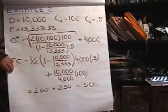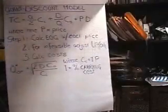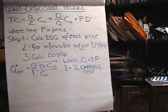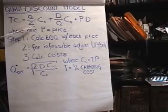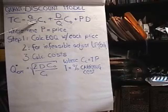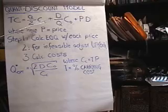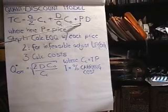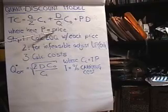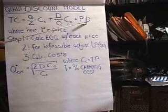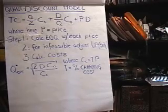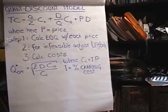The third example is the quantity discount model. Here the total cost includes the carrying cost or holding cost, the order costs. But now we include the cost of the stuff itself, where P is price times our annual demand of D. So we include the cost of the stuff. Whereas before, we assumed that there were no quantity discounts, so it wasn't incorporated.